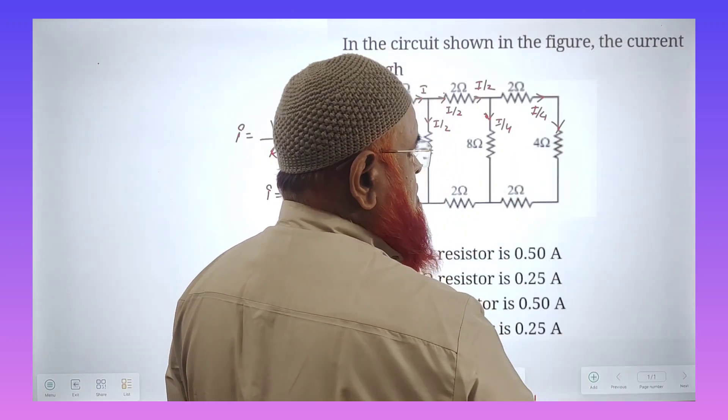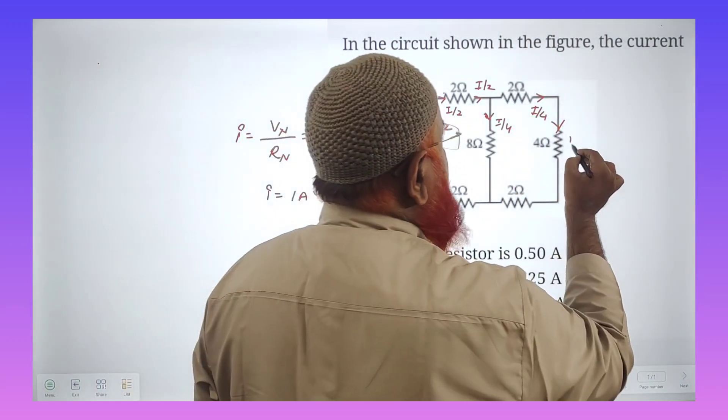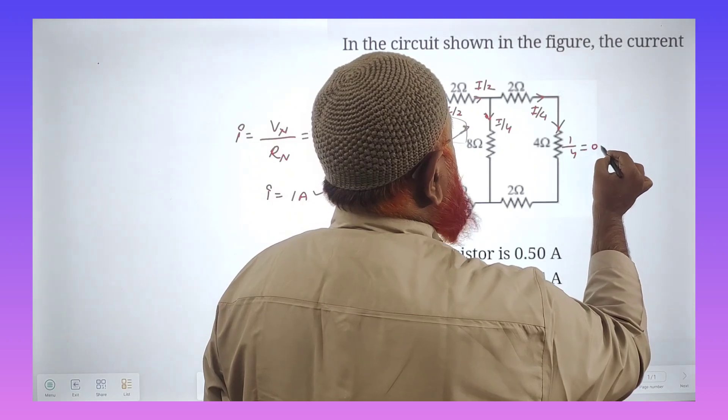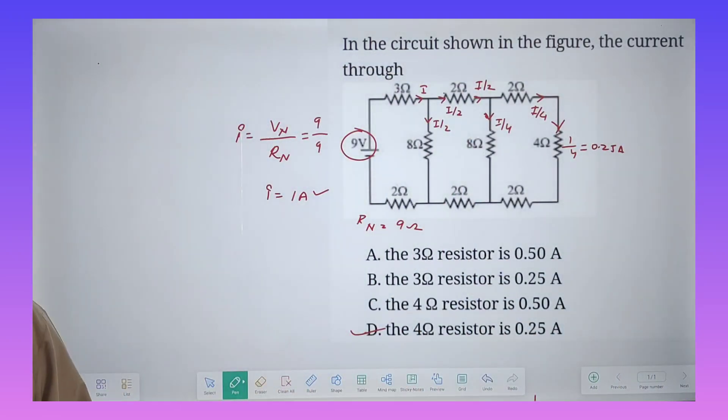So how much current is passing through this 4 ohms? Because I is nothing but 1 ampere. Here at this place 1 by 4 which is nothing but 0.25 amperes of current will flow across the 4 ohms. So that's it.